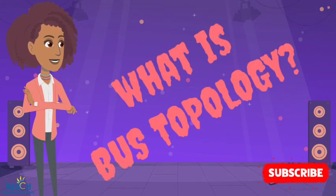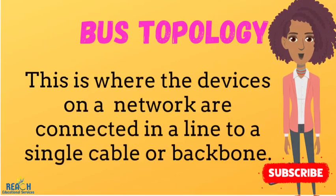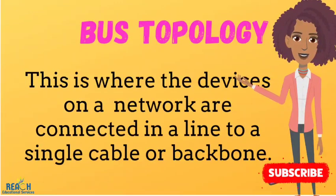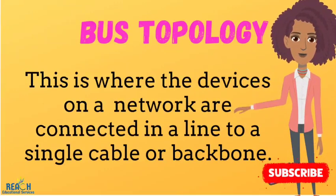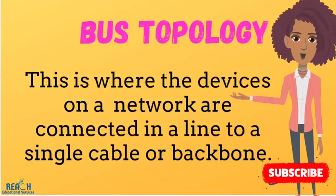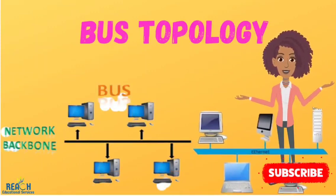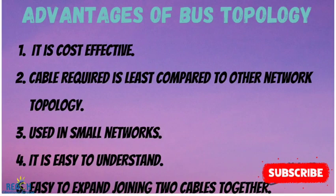Let's start with bus or line topology. In this topology, devices on a network are connected in a line to a single cable or backbone. Because it is connected in a line, it is also referred to as line topology. Here are two examples of bus or line topology. Now let's look at the advantages of bus topology.